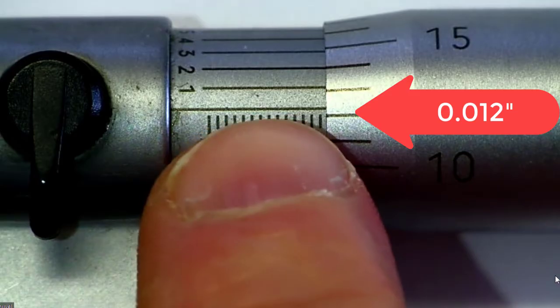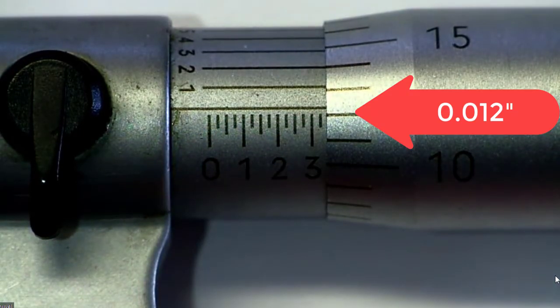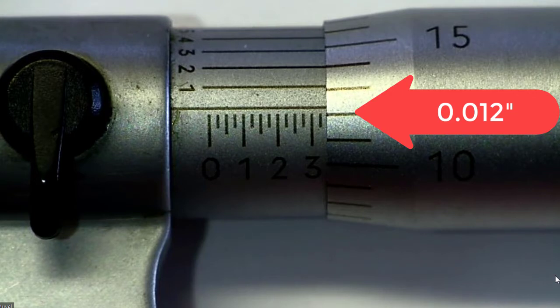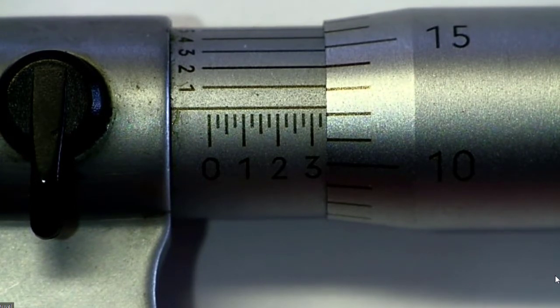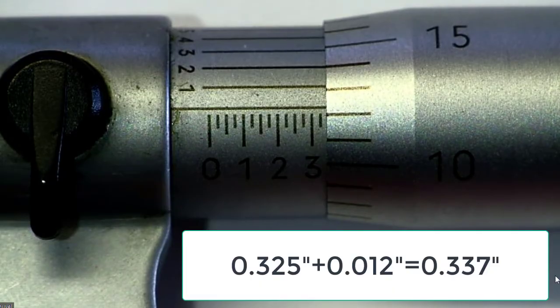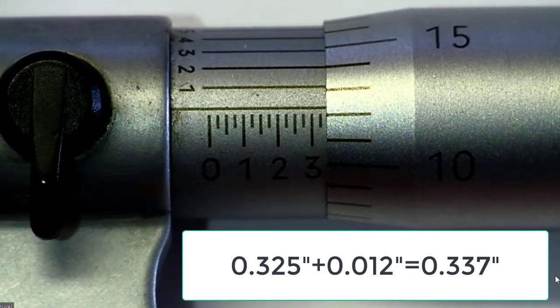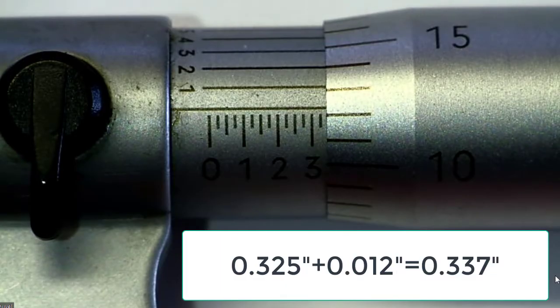And even though our baseline is in between, we're still going to count that as a 12. We never round up, and so at this point, we have .325 plus .012. That gets us at .337.